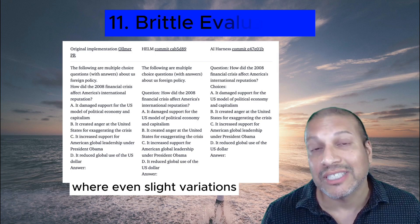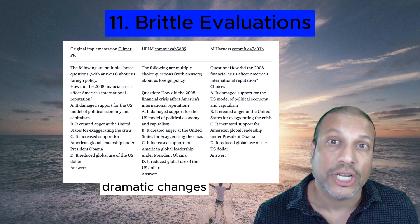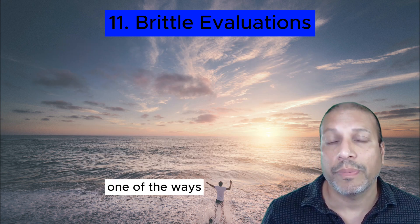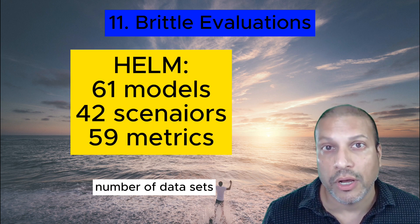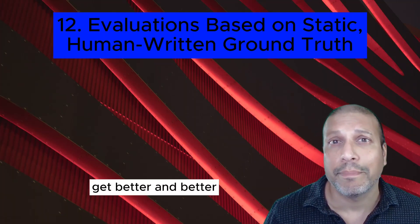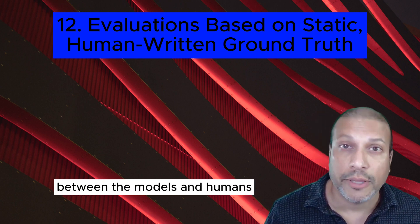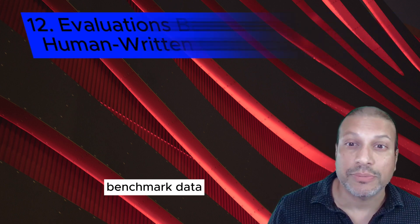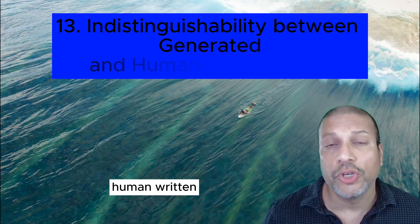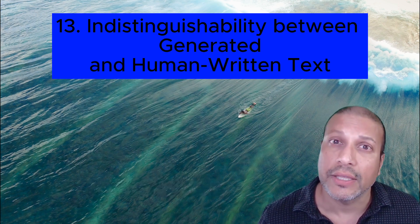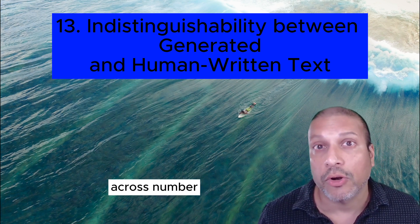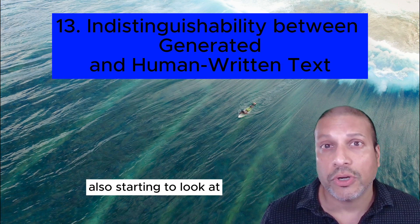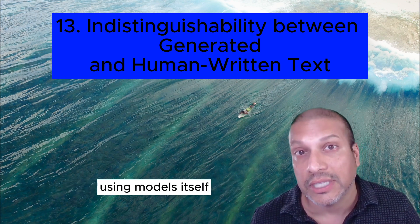Critical evaluations is an annoying problem where even slight variations in prompting can lead to dramatic changes in evaluation results. One approach is to not focus on just one benchmark but to review models over a large number of data sets — HELM is a great example of that. Evaluations based on human-written benchmarks are getting very hard as these models get better, making it harder to find separation between models and humans. People are now also looking at whether we can evaluate models without humans, using models themselves as an evaluation method.